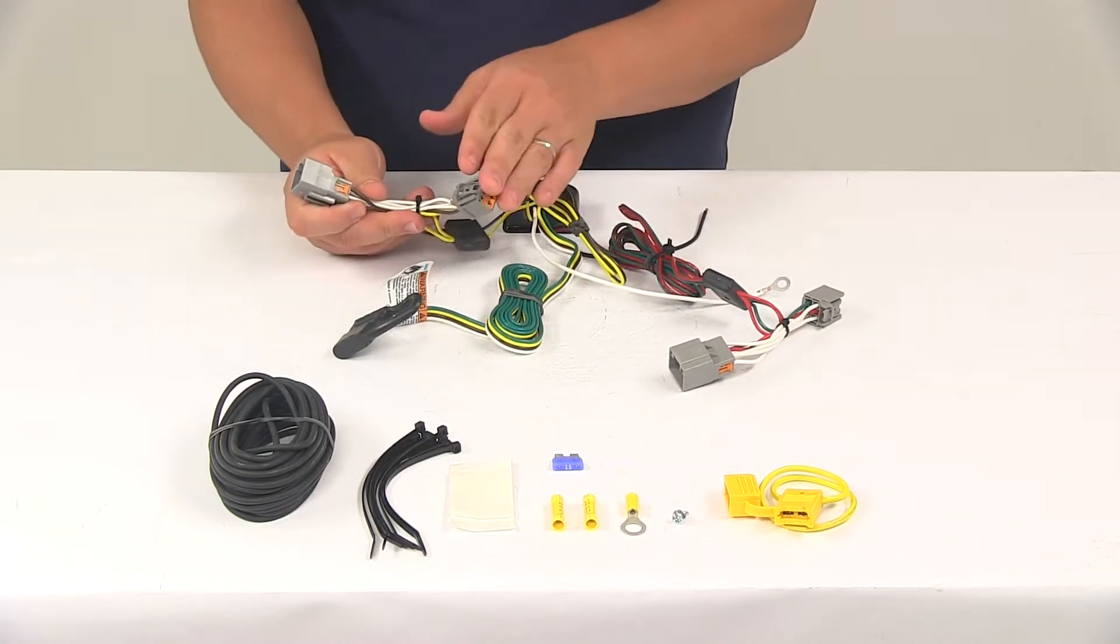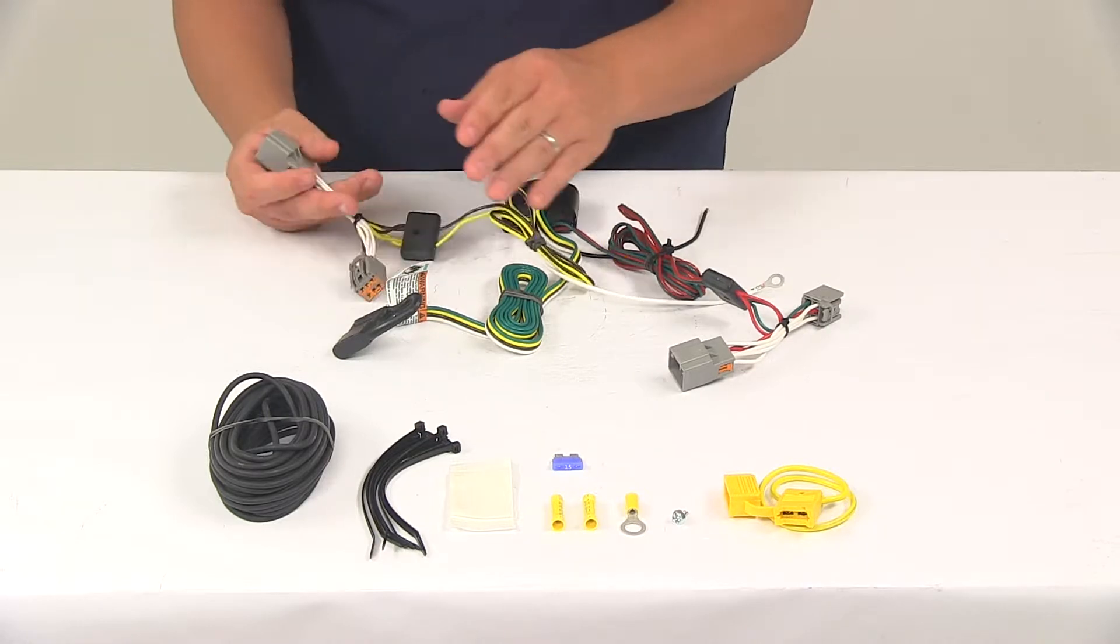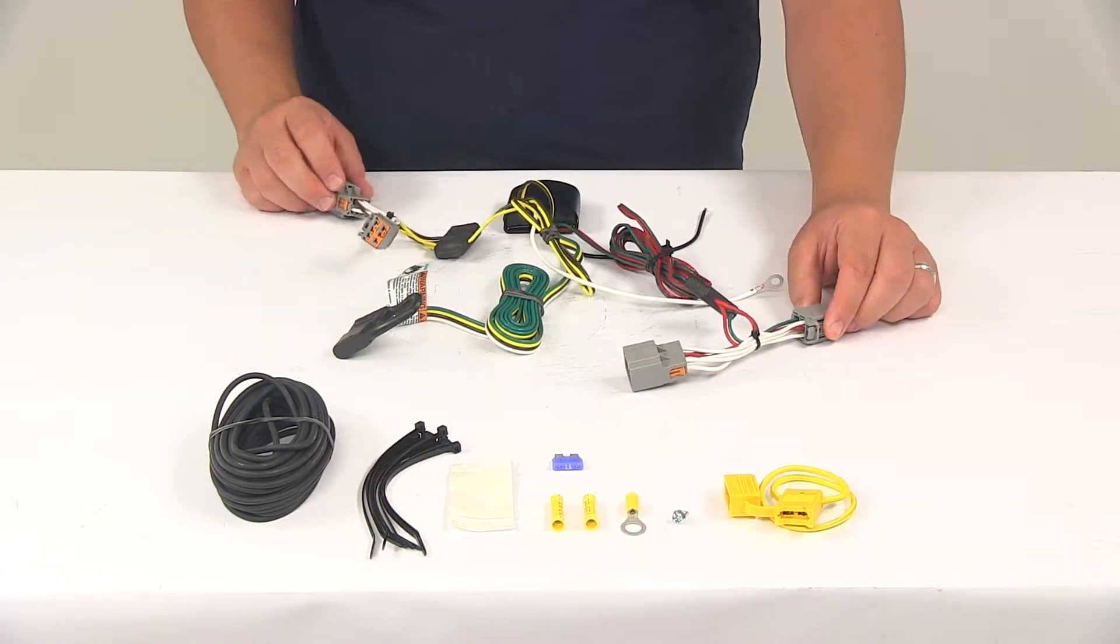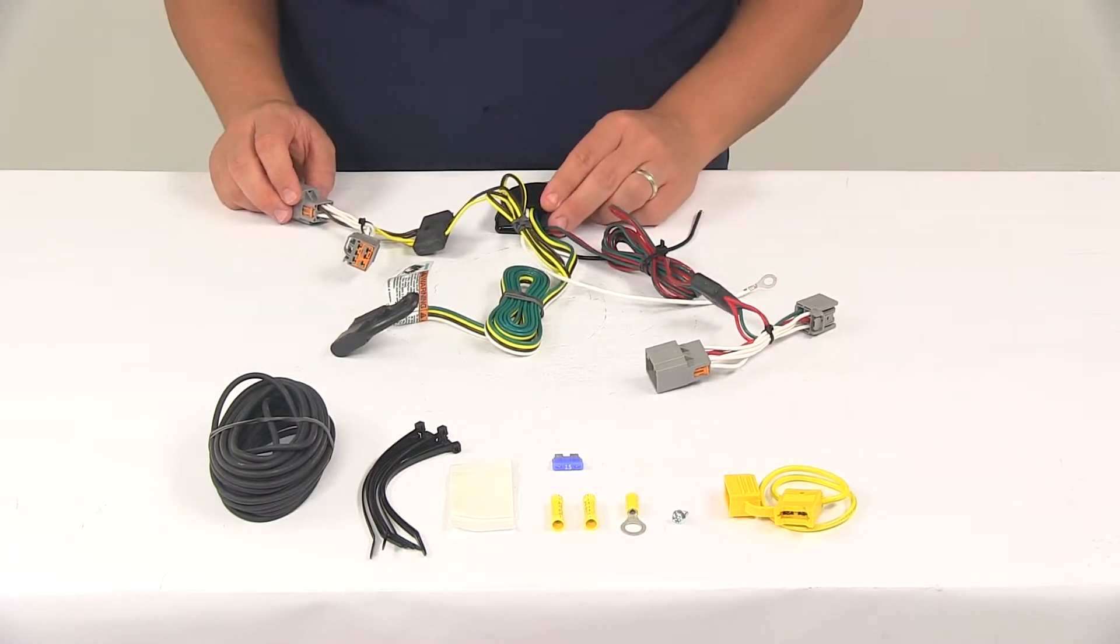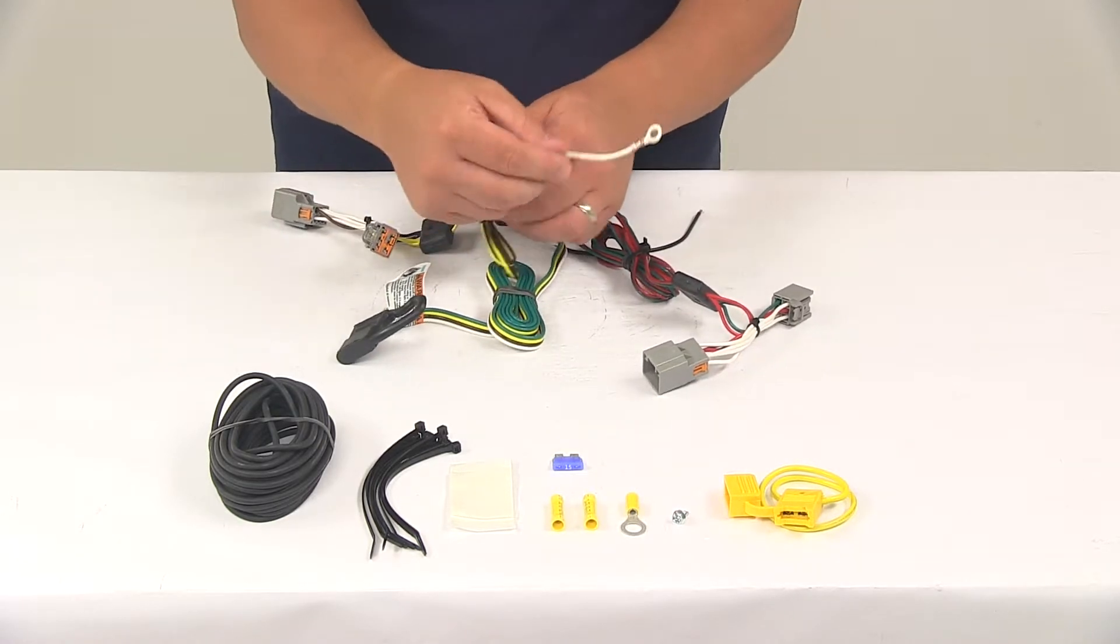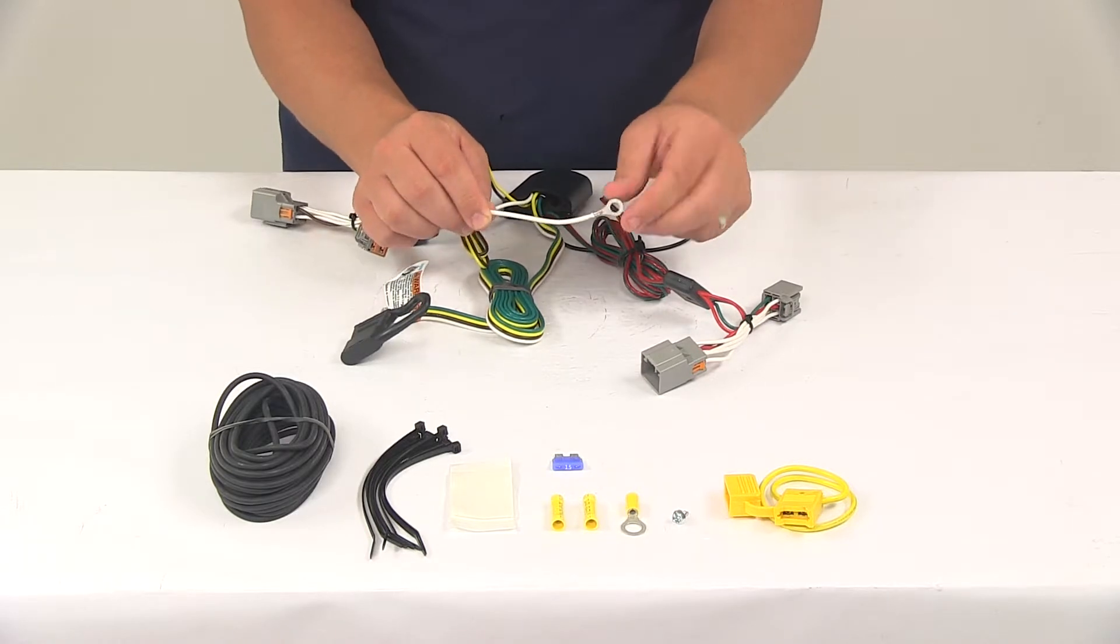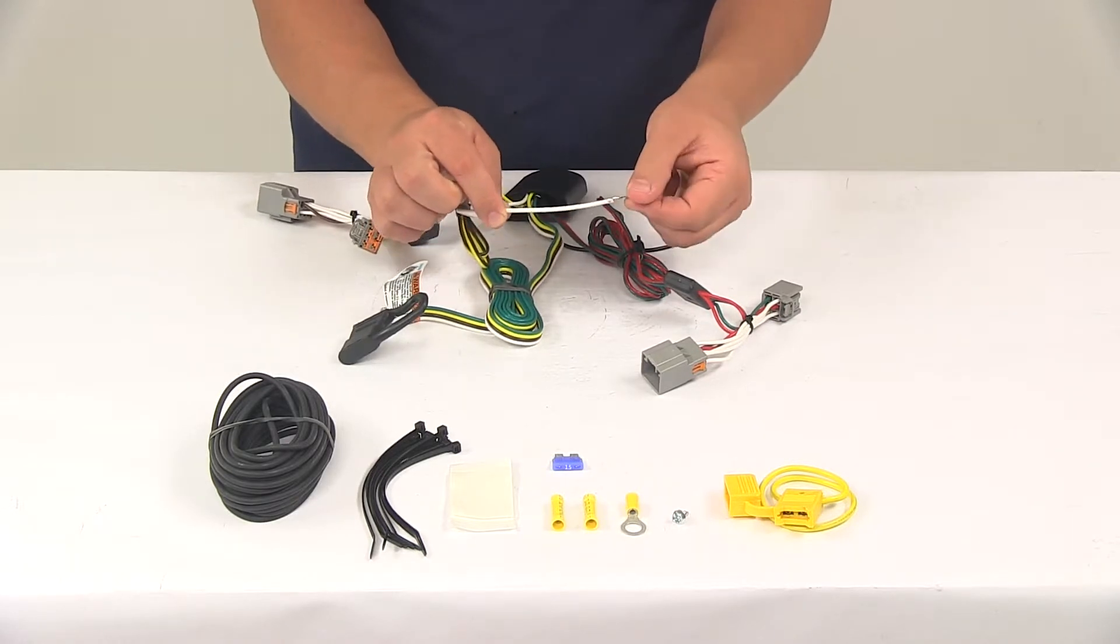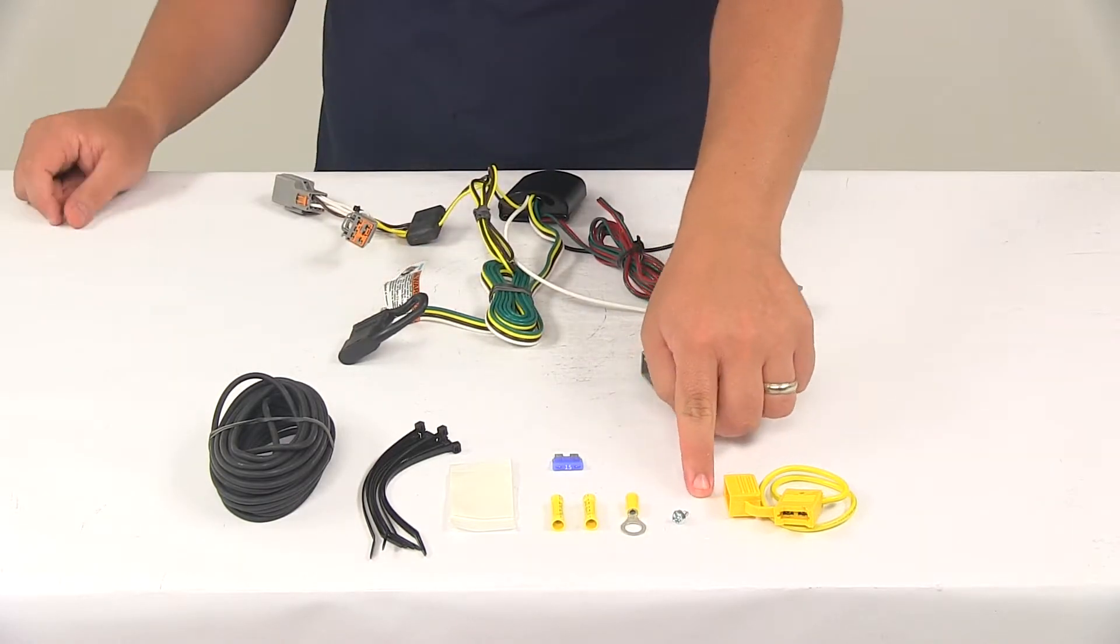The connectors on this harness are going to match up perfectly with the ports on the vehicle, and they're going to snap lock together for a nice, tight, secure fit. Once you have those plugged in, you'll need to make a ground connection. That's going to be your white wire that has a ring terminal already attached to it. You want to get that grounded to a nice, clean metal surface with the included grounding screw.